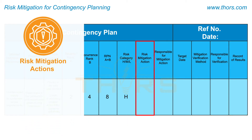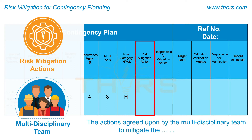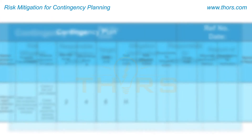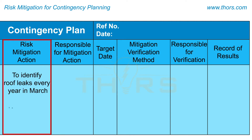In the risk mitigation action column, the actions agreed upon by the multidisciplinary team to mitigate the risks are entered. For the leaking roof example, the risk mitigation actions are identified as: to identify roof leaks every year in March, and to fix the roof leaks or replace roof panels.